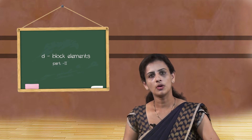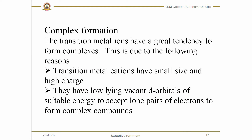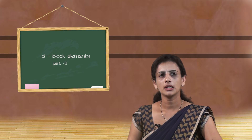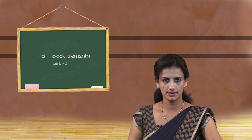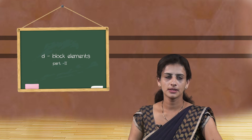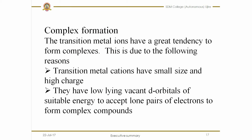Next, an important property is complex formation. Transition elements form complexes with molecules or ions, and these molecules or ions that form complexes with the central metal atom are called ligands. This complex formation tendency is due to two factors: first, transition metal cations have a smaller size and high charge density; second, they have low-lying vacant d orbitals of suitable energy to accept a lone pair of electrons to form complex compounds.